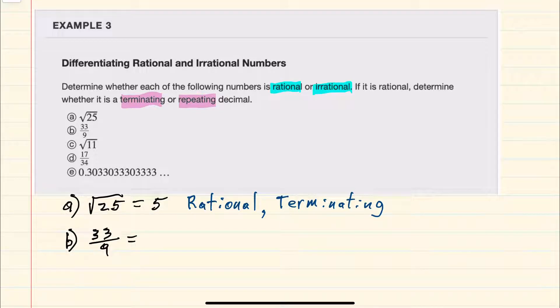For b, we have 33 over 9, and since it's written as an integer over an integer, I can tell that it is rational.